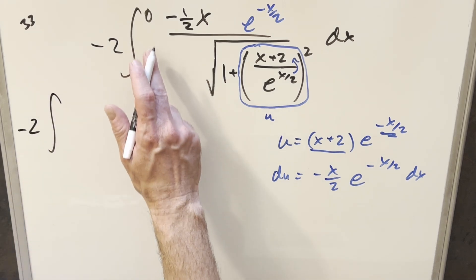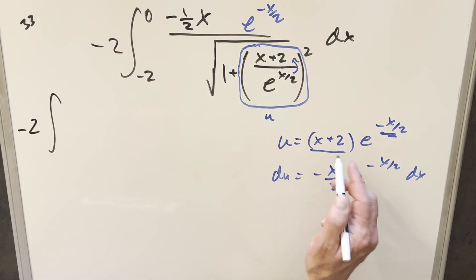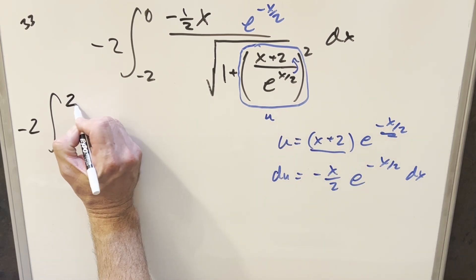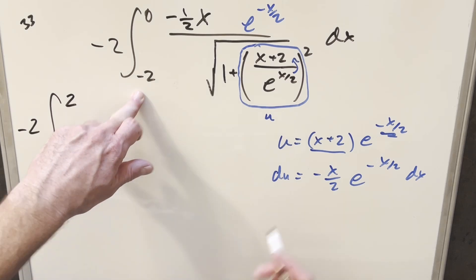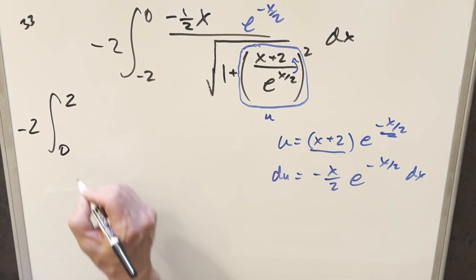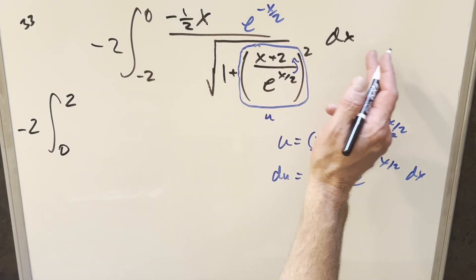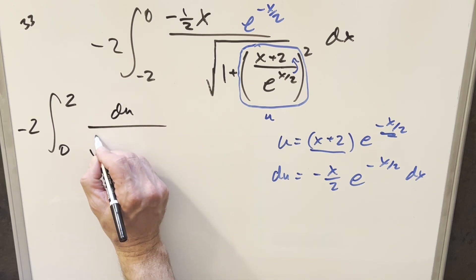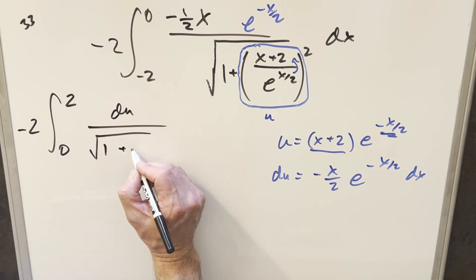So first, updating our bounds, if you plug 0 in here, this first part becomes a 2. And this is 1, so our upper bound just becomes 2. And then plugging in minus 2, this here becomes 0. The lower bound just becomes 0. And then again, our whole numerator is just going to be this du. And then the denominator is going to become square root 1 plus u squared.